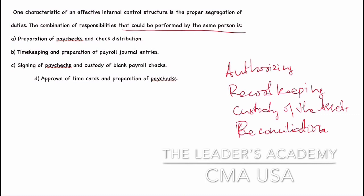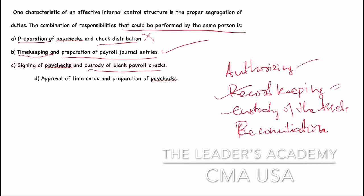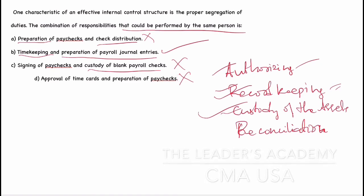Option A — preparation of paychecks falls under record keeping and check distribution falls under custody of the asset, so these two cannot be performed by the same person. Option B — timekeeping and preparation of payroll journal entries: both fall under record keeping, so the same person can do both. Option C — signing of paychecks is authorizing and custody of bank payroll checks is custody of the asset, so this cannot be done by one person. Option D — approval of time cards is authorizing and preparation of paychecks is record keeping, so this also cannot be done by one person. Therefore, the correct answer is Option B. Please give a thumbs up, subscribe to our channel, and stay connected, stay committed.